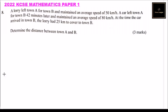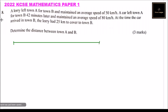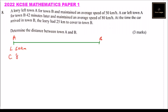To understand this question fully, it is good to use a diagram. So this is the distance from town A to town B. We can say here is the lorry.